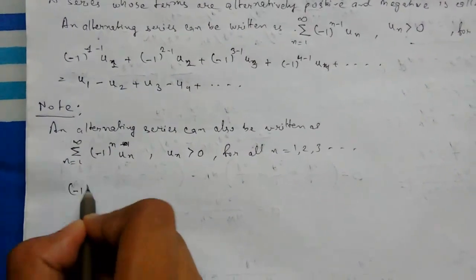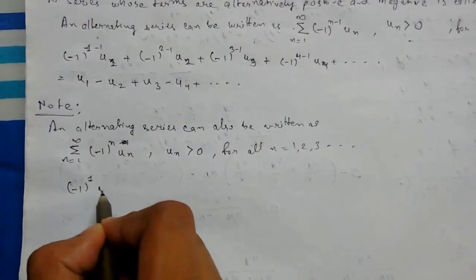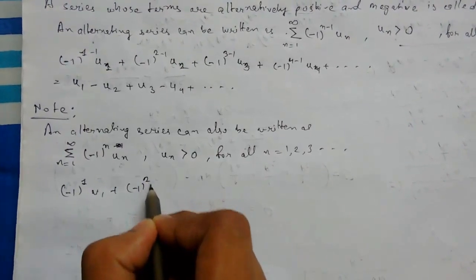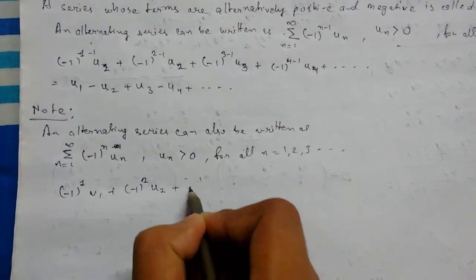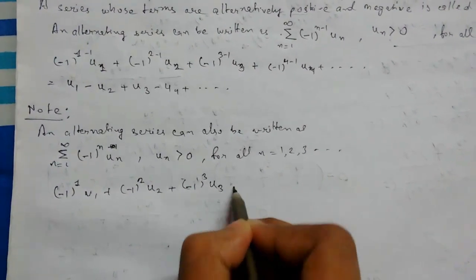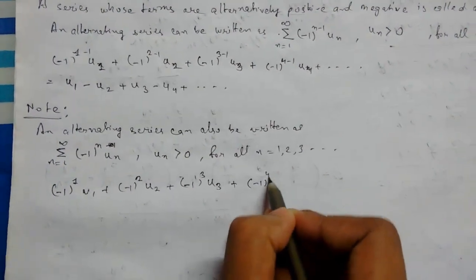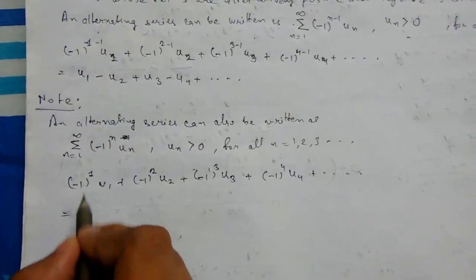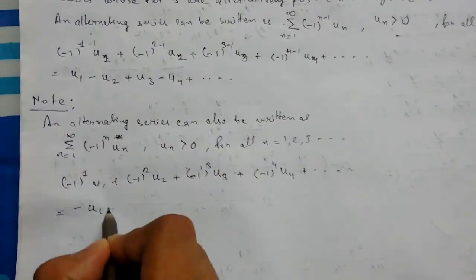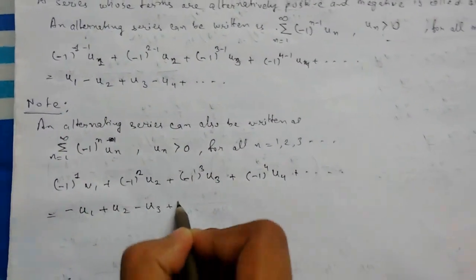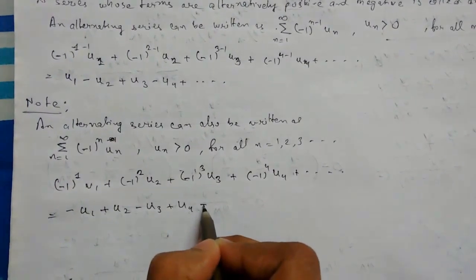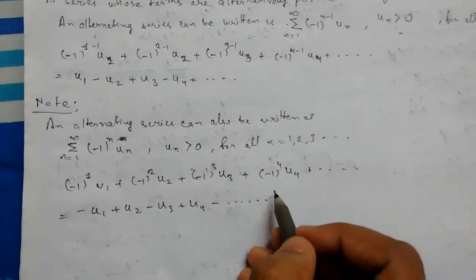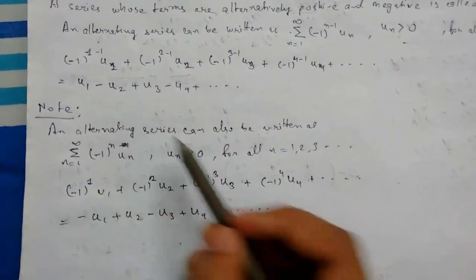Putting n = 1, 2, 3, 4 we get: minus 1 to the power 1 times u_1, plus minus 1 to the power 2 times u_2, plus minus 1 to the power 3 times u_3, plus minus 1 to the power 4 times u_4, and so on. This gives minus u_1 plus u_2 minus u_3 plus u_4 minus and so on. So there is no necessary condition that an alternating series must begin with a positive term — it can begin with a negative term as well.